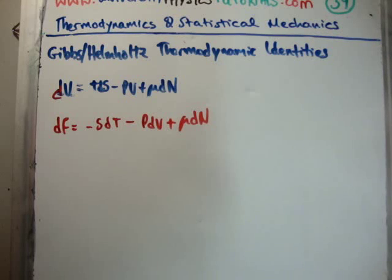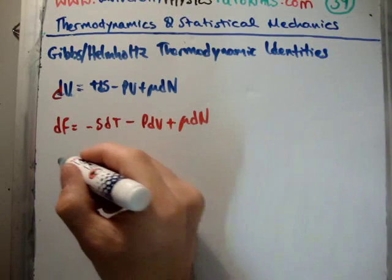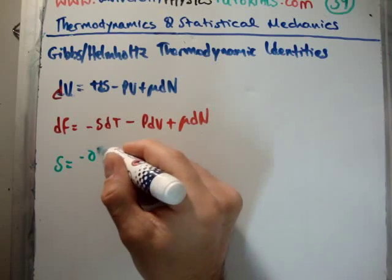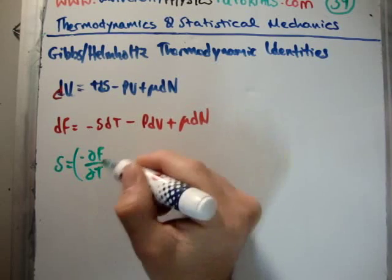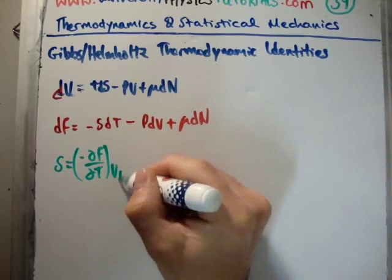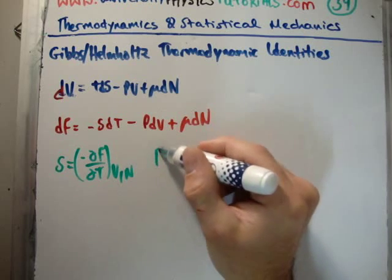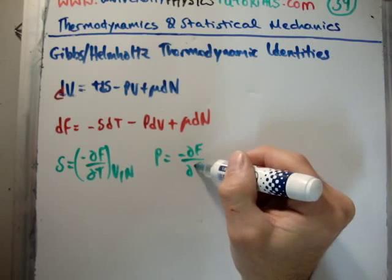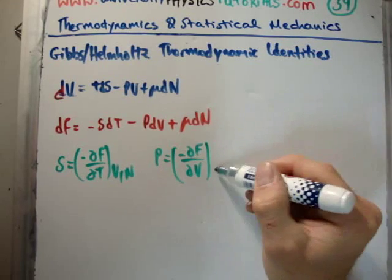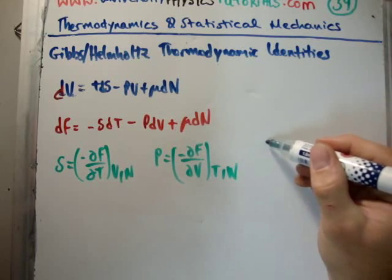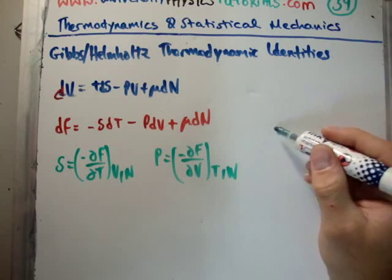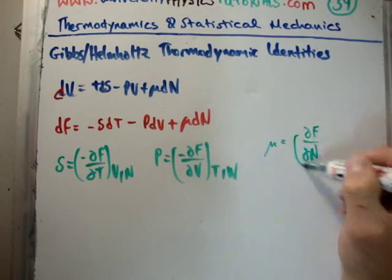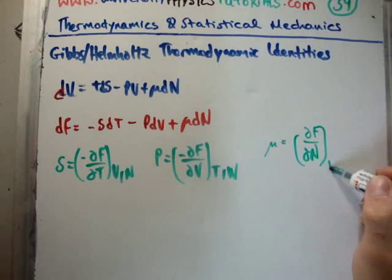So if we hold, for example, the volume and the number of particles fixed, we get entropy. Entropy is minus (∂F/∂T) if we hold the volume and the number of particles fixed. We know that the pressure is going to be equal to minus (∂F/∂V) at constant temperature and number of particles. And we know that the chemical potential is equal to (∂F/∂N) where we hold the temperature and volume fixed.